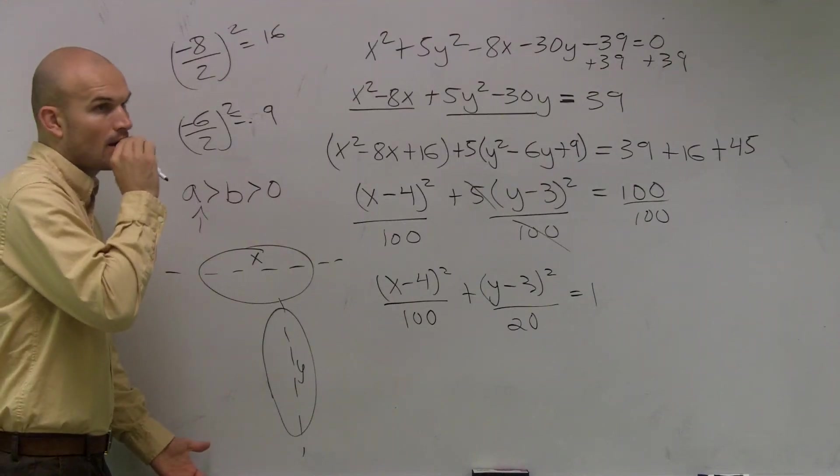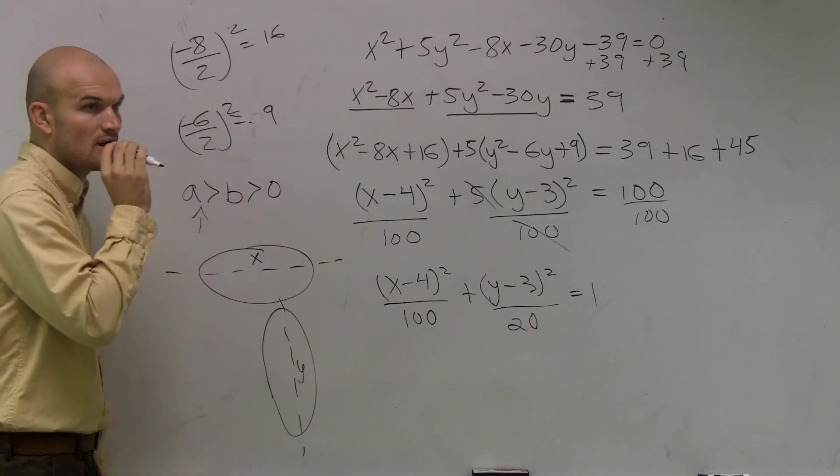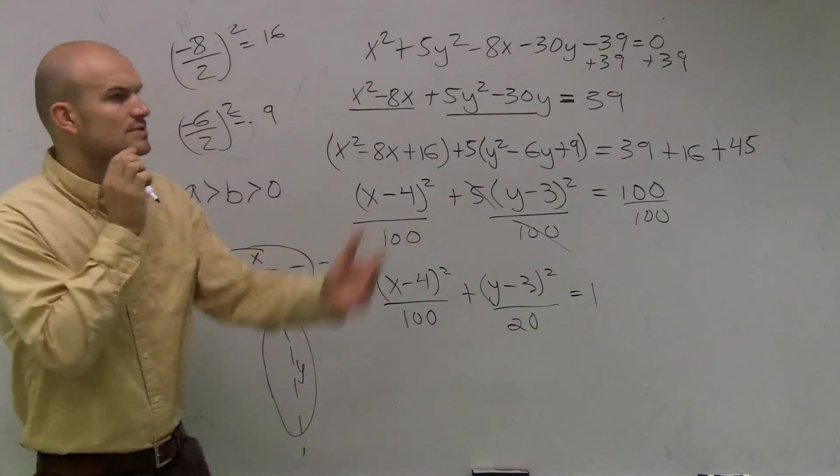You can just look at the equation. Look, if the a squared is bigger, then it's going to be a horizontal axis. Because in the equation, it occurs in the x.